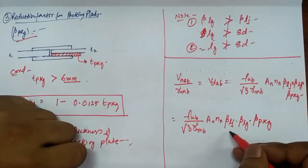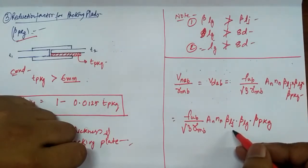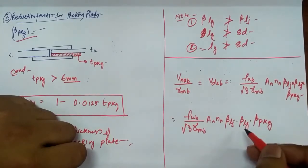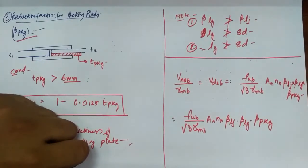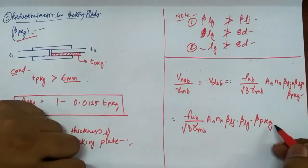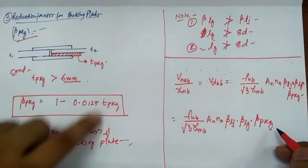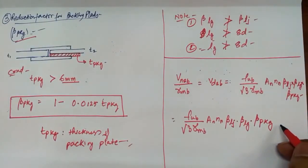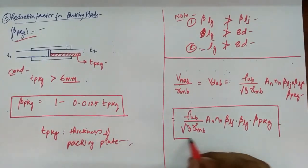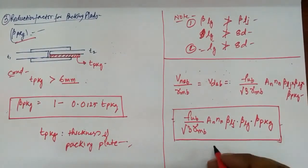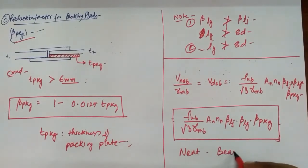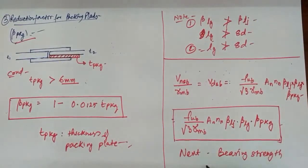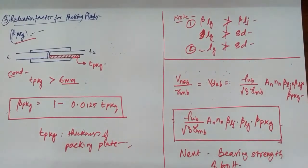To summarize: beta LJ is applied when the joint length exceeds 15 times d; beta LG is applied when the grip length exceeds 5 times d; and beta PKG is applied when the packing plate thickness exceeds 6 mm. Thank you very much for watching. In the next lecture, we will study the bearing strength of bolts. Have an awesome day!